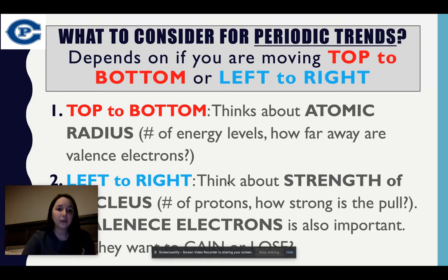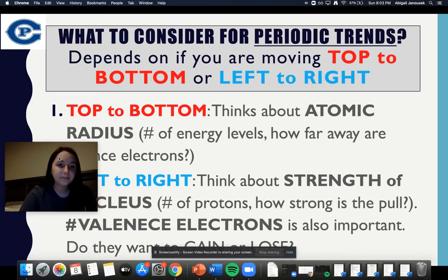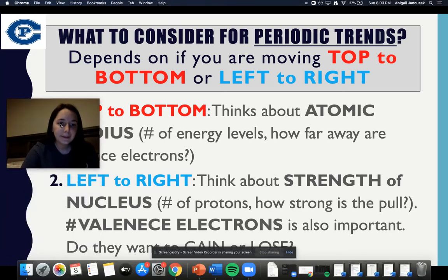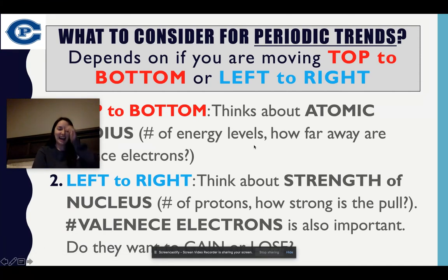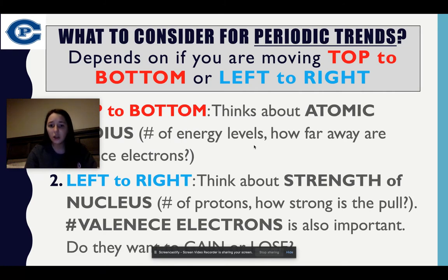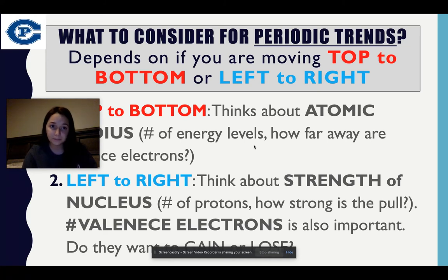Left to right, we're going to think about the strength of the nucleus — the number of protons, how strong is the pull, the number of valence electrons, and whether they want to gain or lose to follow the octet rule. This is important when we're considering the trends.